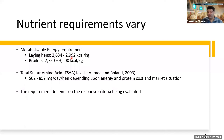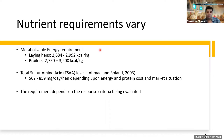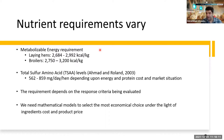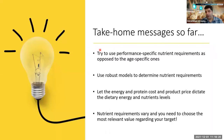Why is there a range for nutrient requirements? One possible answer is that requirements depend on the response criteria being evaluated. Some studies evaluate based on improving the immune system, others look at feed efficiency, and others at performance — leading to different nutrient requirements. Our job is to use mathematical models to select the most economical choice under the light of ingredient costs and product price.